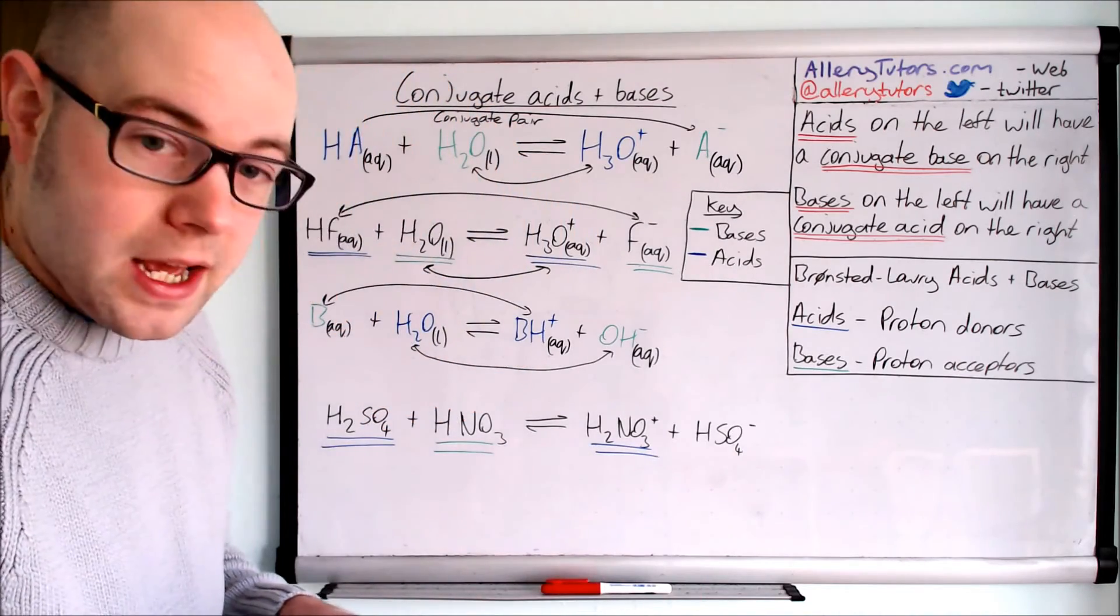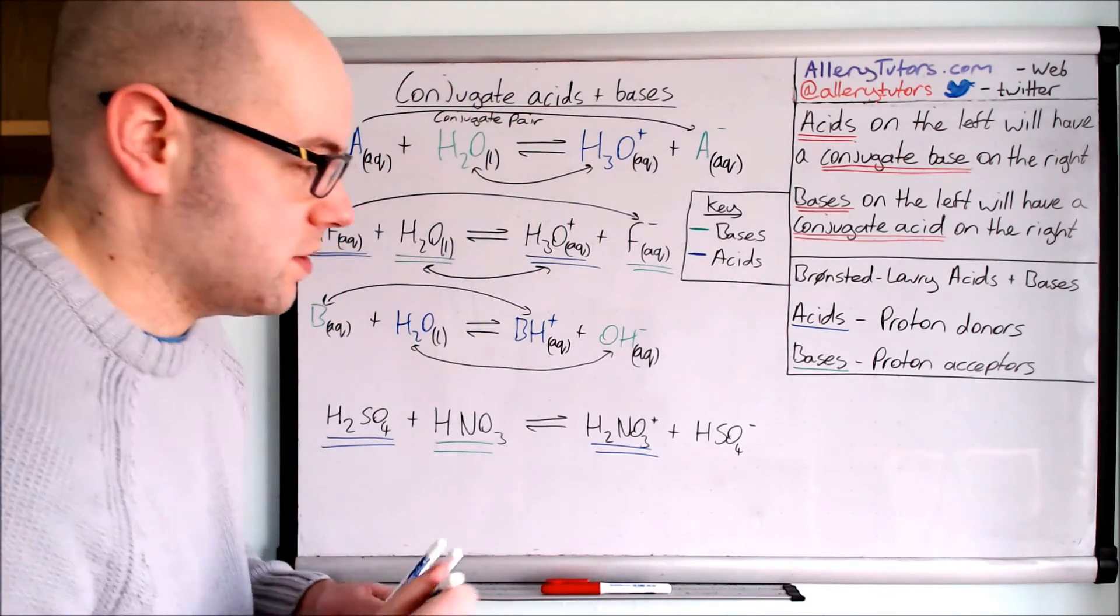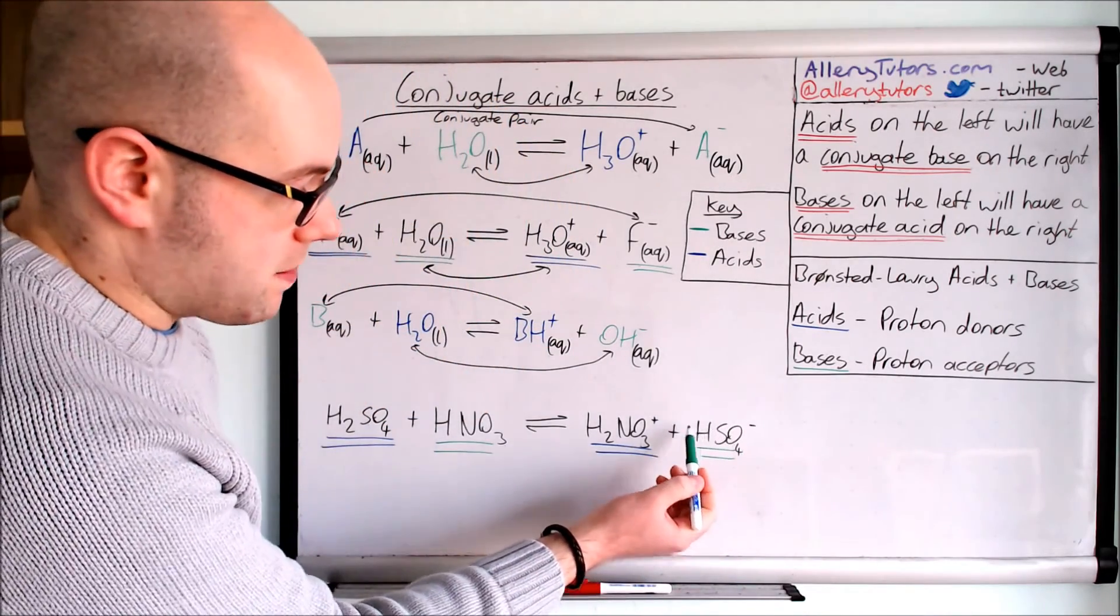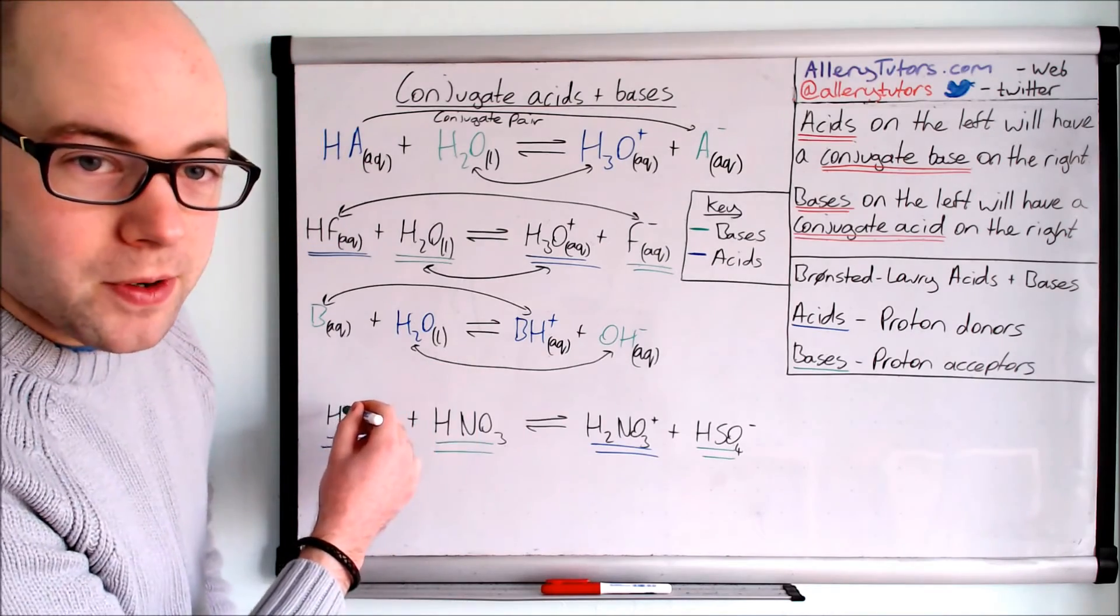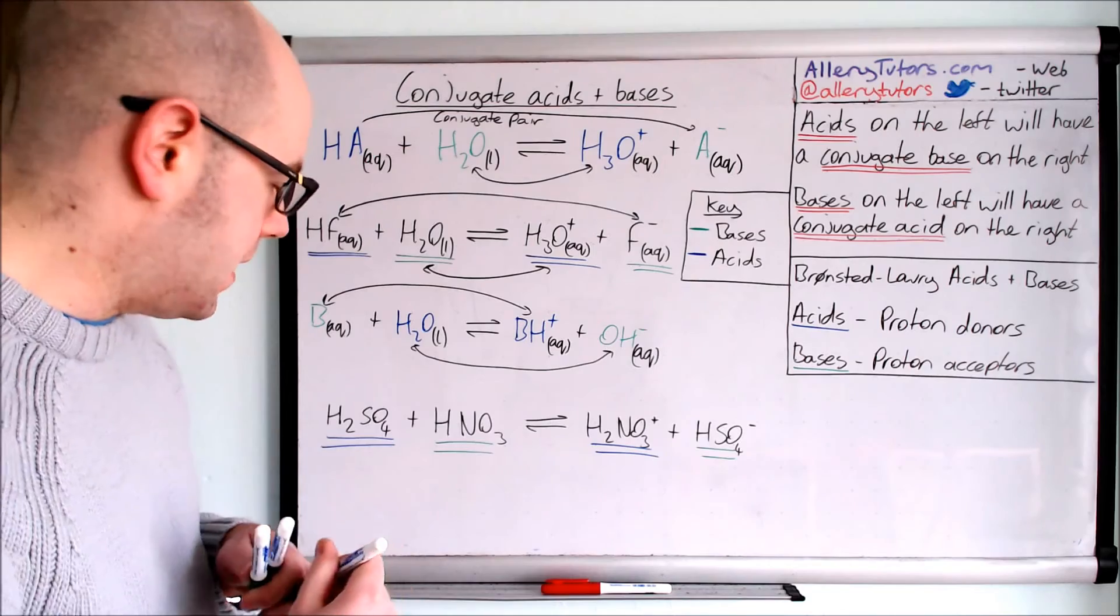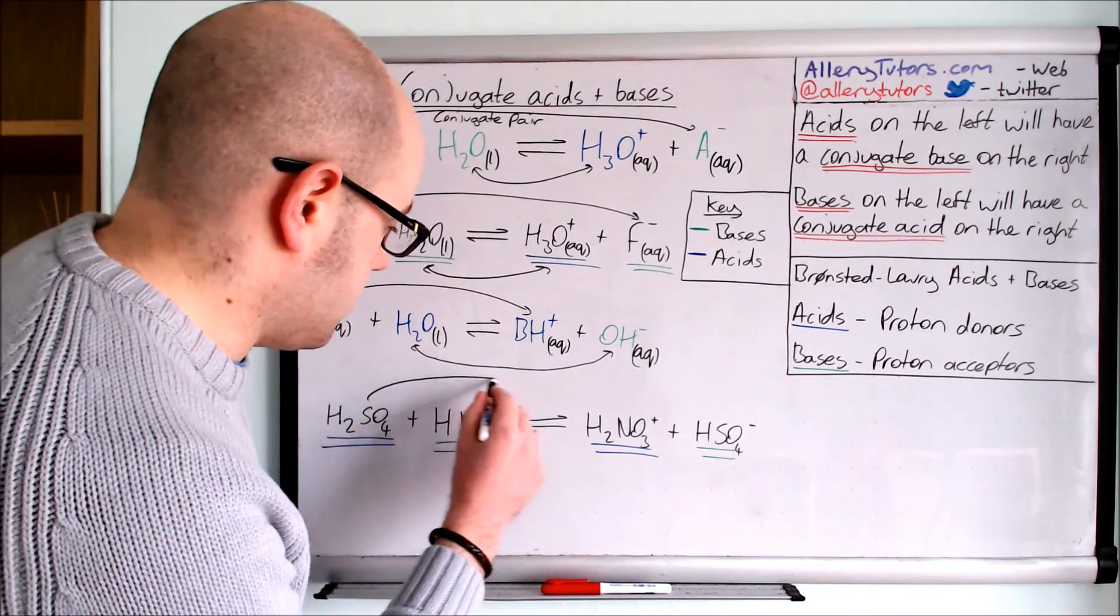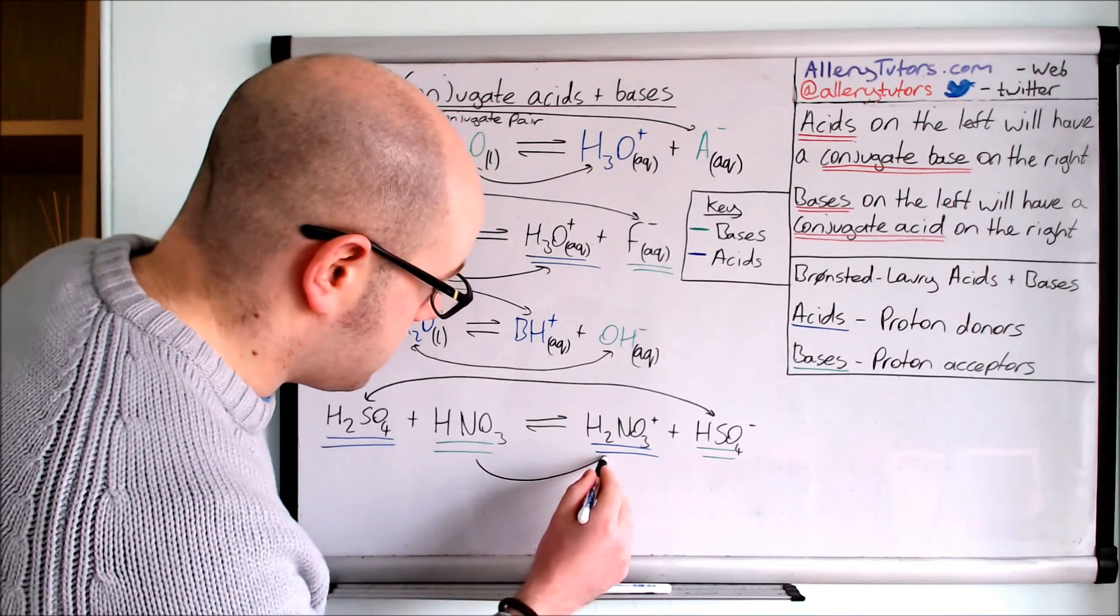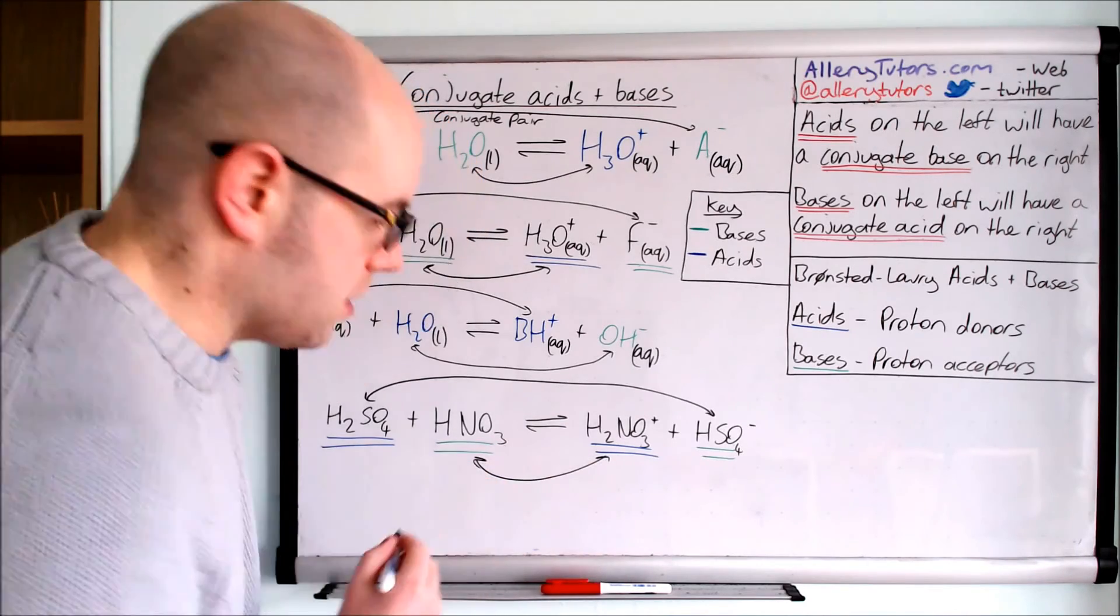Okay and on the other side obviously this is going to be the base because the bases are proton acceptors. This would accept a proton to form H2SO4. So if we had to link these two, your acid and base would link up. There's your acid and there's your base. They would link up as a conjugate pair and these two would link up as a conjugate pair.